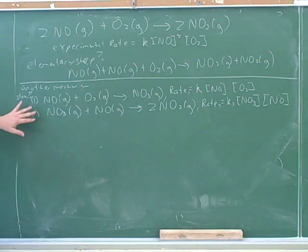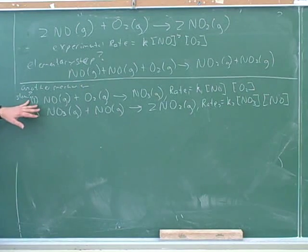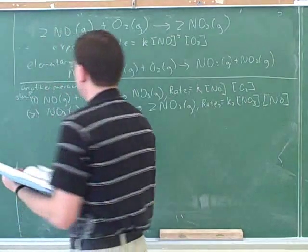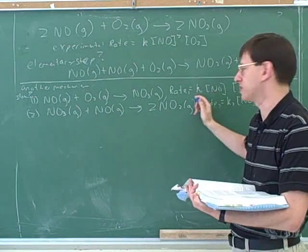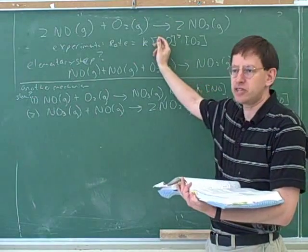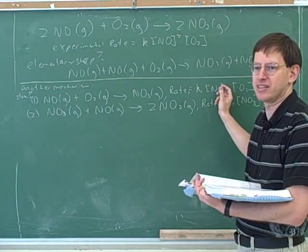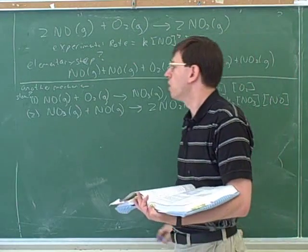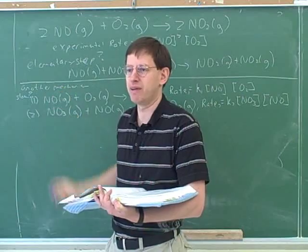We need to make an assumption — basically test. Let's start by testing whether this is the right mechanism and step 1 is the slow step. I'm testing whether step 1 is the slow step. How can we test whether it really is the slow step? Compare it to the experimental rate. And how do they compare? They don't. So if this is the mechanism, is step 1 the slow step? No. If step 1 were the slow step, this would be the overall rate expression. But we were told this was the true experimental rate, and they don't match up — this has the exponent 2 and this has the exponent 1.